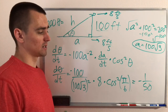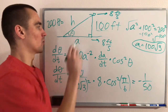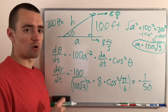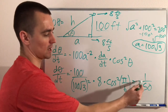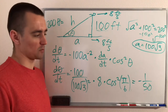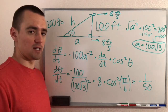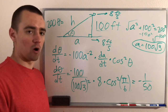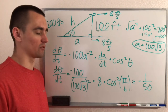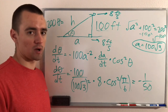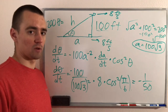The question asked for the rate at which the angle is decreasing, and the word 'decreasing' was already included in the question. We found dθ/dt = −1/50 radians per second, so we can say the angle is decreasing at a rate of 1/50 radians per second. The answer is a positive number because the negative sign is essentially included within the word 'decreasing.'